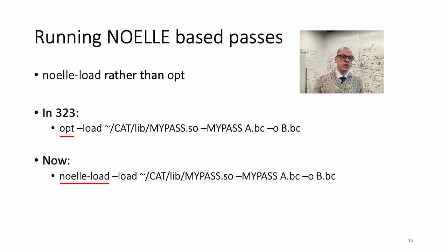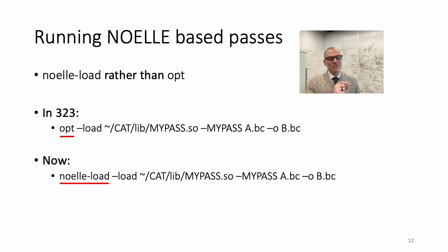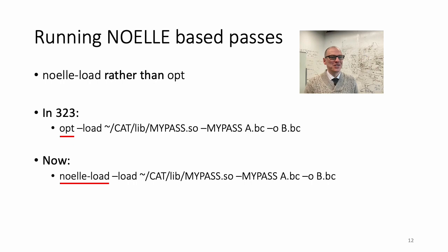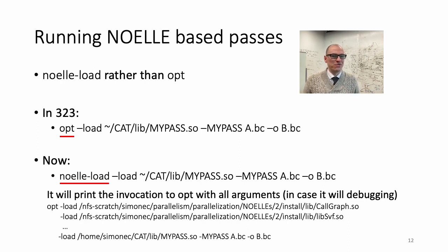Instead of doing that, you replace OPT with noell-load — that's it. Every single option you could have used in OPT, you can use in noell-load. Basically noell-load is a wrapper of OPT. I wrapped it because I was tired of invoking a NOEL-based tool using OPT and listing all shared libraries that NOEL built internally and all their options. Noell-load will also print the actual command line that invokes OPT with all the options, so you can see what it would look like if you wanted to invoke OPT directly.